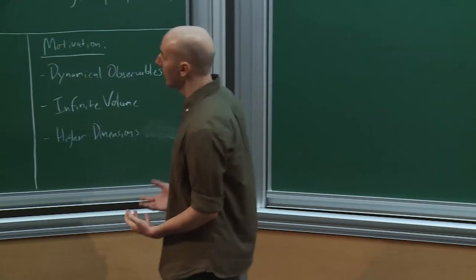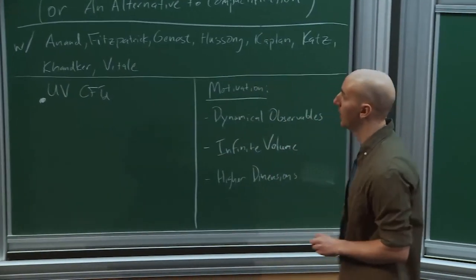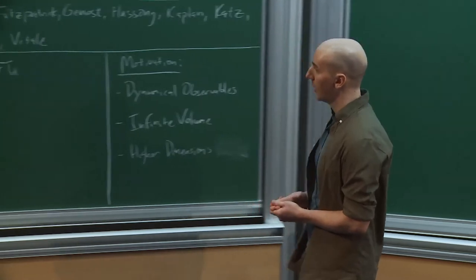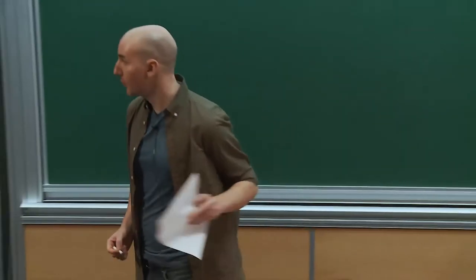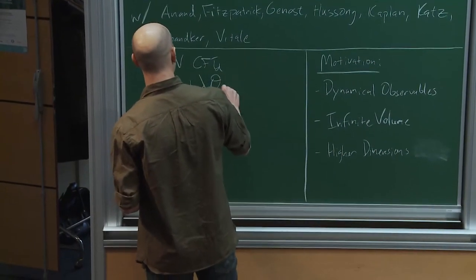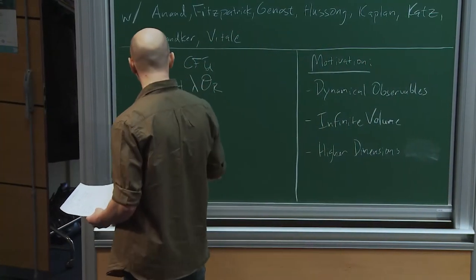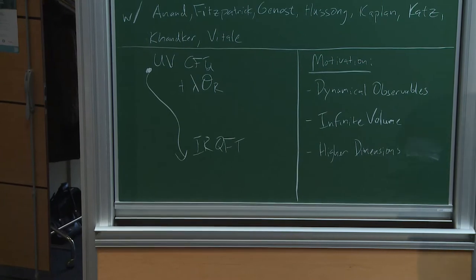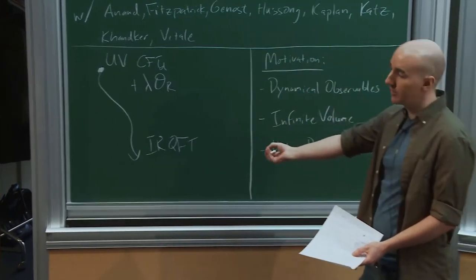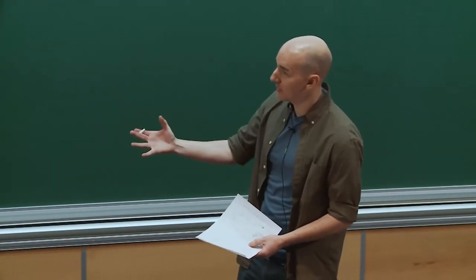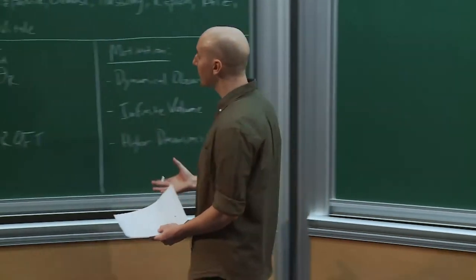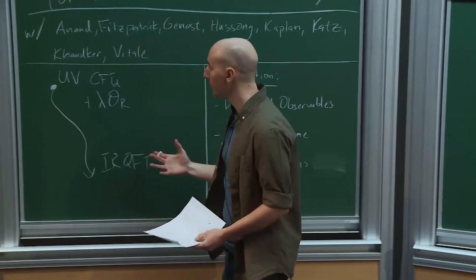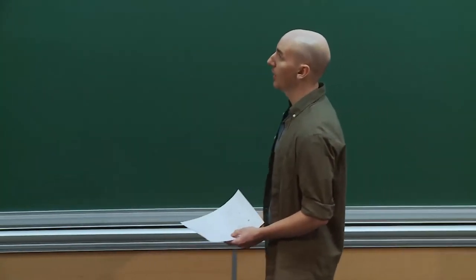The basic setup is: I start with some conformal field theory in the UV in some number of space-time dimensions. I assume I have all the data about this starting UV fixed point. Then I deform that CFT by one or more relevant operators, breaking conformal invariance and creating some RG flow leading down to some new quantum field theory in the IR. I want to be very agnostic about what's happening in the IR — I could have a mass gap, the gap could close, and I could reach a new IR fixed point. I'm especially interested in studying this system in the case where the theory is strongly coupled.